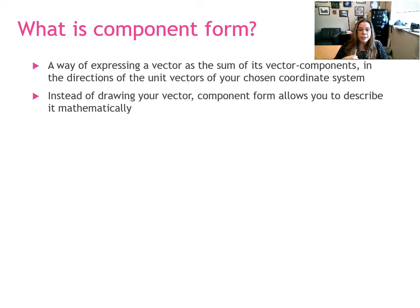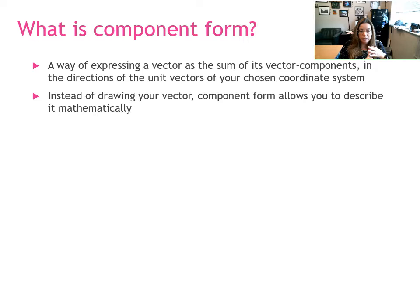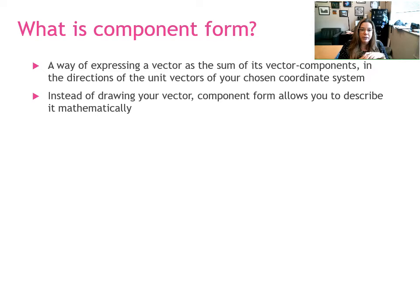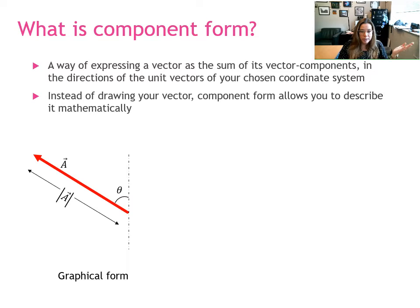We're going to always be working in a Cartesian coordinate system, so a vector can be represented as the sum of its vector components along the x-hat, y-hat, and z-hat directions. The purpose of expressing a vector in component form is so that you can then use the vector and perform mathematical operations on it, instead of always doing the graphical method of drawing the vector like an arrow. This is a complementary way of thinking about vectors in component form in a particular coordinate system.